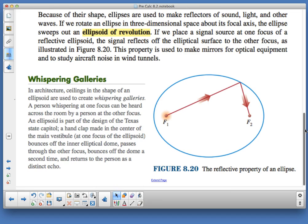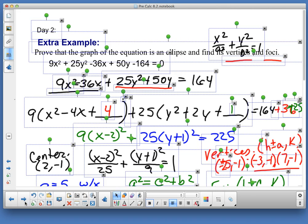Now, the reflective property of an ellipse. Because of their shape, ellipses are used to make reflectors of sound, light, and other waves. If we rotate an ellipse in three-dimensional space about its focal axis, the ellipse sweeps out an ellipsoid of revolution. If we place a signal source at one focus of a reflective ellipsoid, the signal reflects off the elliptical surface to the other focus. As illustrated here in figure 8.20. This property is used to make mirrors for optical equipment, and to study aircraft noises and wind tunnels. Now, in architecture, ceilings in the shape of an ellipsoid are used to create whispering galleries. So, if you are standing at the foci, you can whisper. And the person standing on the far side of the room at the other foci would hear you quite clearly.